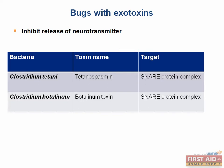Similar to C. tetani, Clostridium botulinum toxin also blocks neurotransmitter release by cleaving the SNARE protein complex. However, in this case it blocks the release of stimulatory acetylcholine from presynaptic nerve terminals. The key sign is flaccid paralysis. On your test, you're likely to see a vignette about a baby brought in by concerned parents.